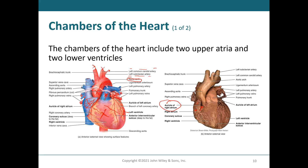Two great vessels you always need to know are the superior and inferior vena cava. The superior vena cava brings back systemic deoxygenated blood from the head, neck, arms, and upper torso into the right atrium. The inferior vena cava receives blood from the legs and lower trunk, and all that deoxygenated blood goes into the right atrium as well. There are three ways deoxygenated blood gets into the right atrium: the superior vena cava, the inferior vena cava, and the coronary sinus, which carries deoxygenated blood from the myocardium.